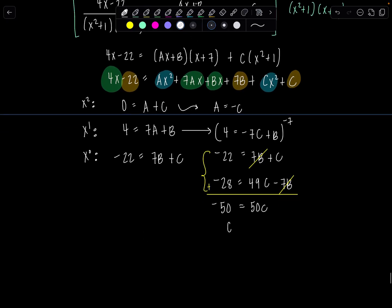So c is negative 1. And then, since a is negative c from here, then a is positive 1. And then just take a quick peek over here. If a is 1, 4 plus 7 is b. So then we know b is negative 3. That's it. So we've got that done.